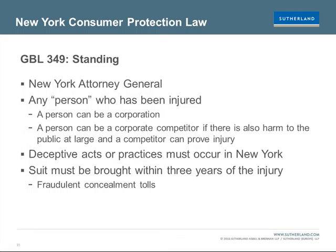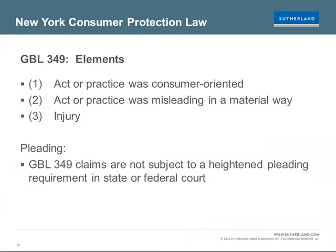There are three elements to a GBL 349 claim: the act or practice must be consumer oriented; the act or practice must be misleading in a material way; and there must be some sort of injury caused by the deception. It's important to note that when defending these cases and determining whether to move to dismiss, GBL 349 — even though it seems like it might be a fraud-type claim — is not actually subject to a heightened pleading requirement in either state or federal court. So if you're in federal court, you still have to survive Iqbal/Twombly, but there won't be that heightened fraud requirement.